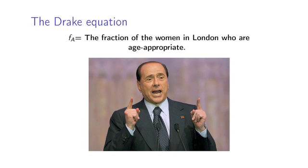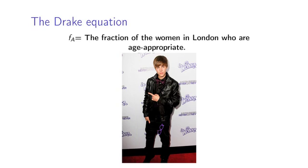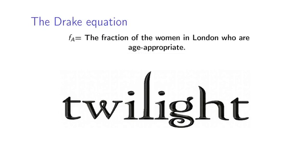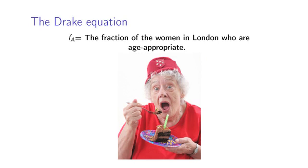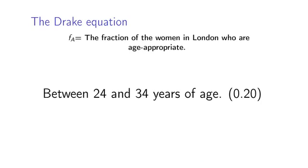But the age appropriateness is a very important question. I don't want someone too young because if they're too young, we may be in a fight because I don't know who Justin Bieber is or because I don't care about that. Now, alternatively, I don't want them to be too old because, well, I just don't want someone to be too old. So let's say I'm interested in women between the age of 24 and 34. And the percent of women in London that are between that age is about 0.2.